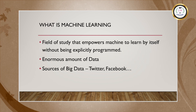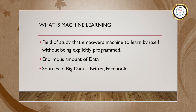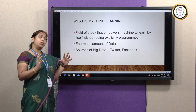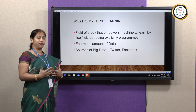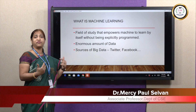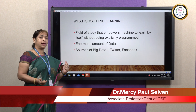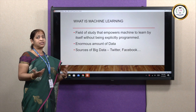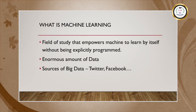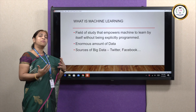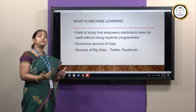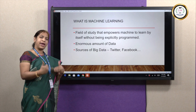Machine learning is a field of study that empowers a machine or system to learn by itself without being explicitly programmed. Earlier days we did programming by ourselves, but now we have an enormous amount of data generated through Facebook, Twitter, WhatsApp and so on. With the amount of data we have, it acts as a fuel to machine learning algorithms for a system to learn anything by itself.